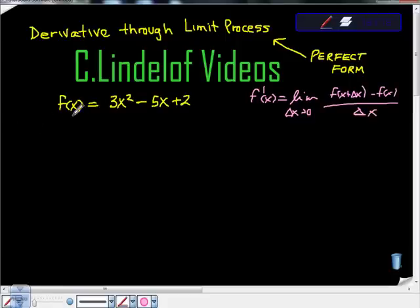So if I was asked to find the derivative of this using the limit process, this is what my professor would expect of me. He or she would expect me to start off by saying f prime at x is equal to the limit as the change in x approaches 0. And then here I'm just going to fill in this limit process stuff.